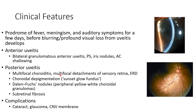Coming to the signs of posterior uveitis in VKH disease, there can be multifocal choroiditis and multifocal detachment of serous retina and exudative retinal detachment. This picture shows the serous retinal detachment seen in a case of VKH disease.